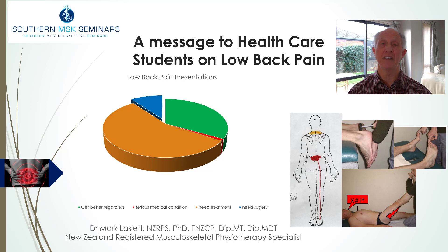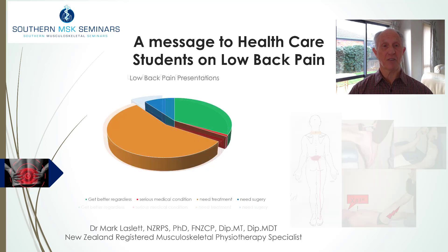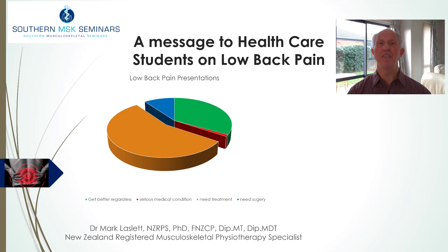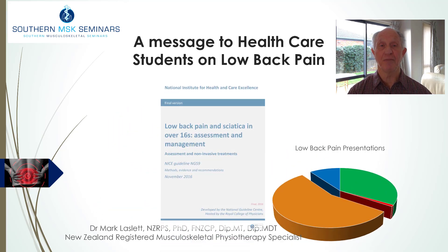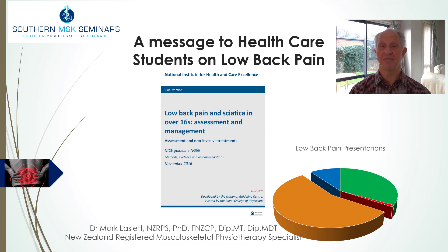Knowing how to identify the 10% who should see a surgeon is as simple as getting a good pain drawing and being able to do the basic neurologic screening examination. For the other group, perhaps 50% of all cases who have neither the simplest or the most serious complaints, you will need to know more than the simple diagnostic triage recommended by national guidelines. You can start by learning about stratification, such as in the NICE guidelines. This too is not enough to be effective for perhaps 40% of patients.